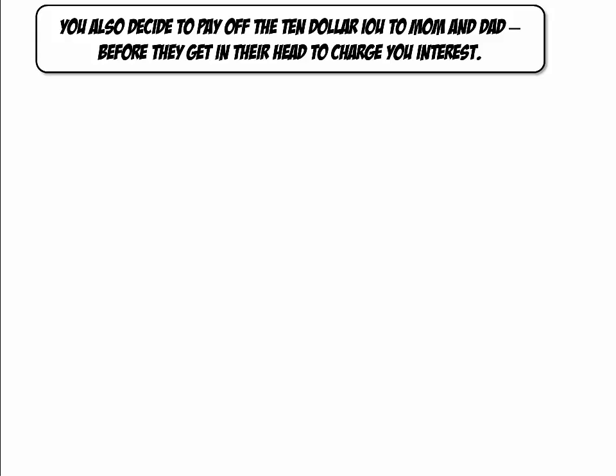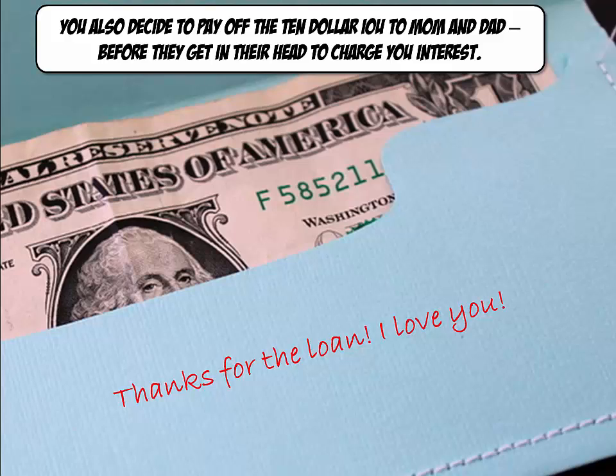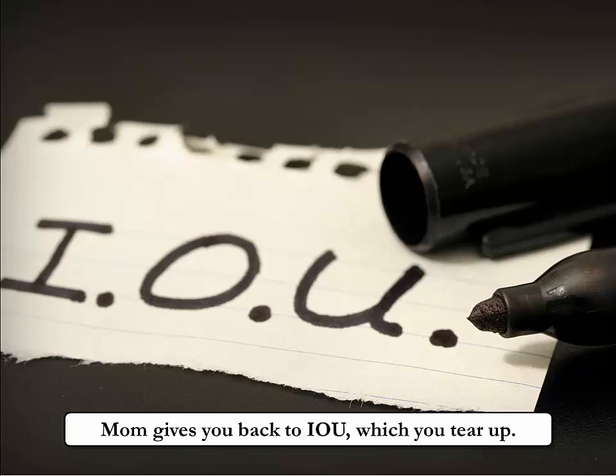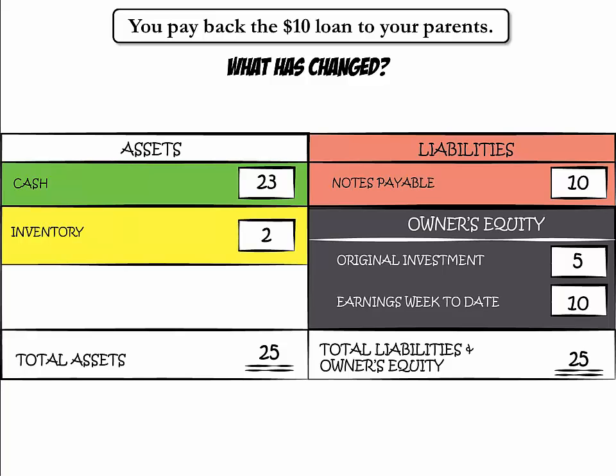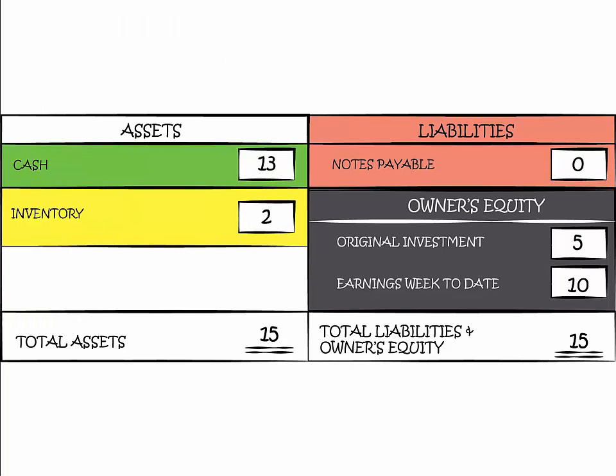You want to pay mom and dad back before they decide to charge you interest. You put the $10 in an envelope and turn it over to them. Mom returns the paper that said you owed them money. Our cash has gone down by $10 to $13, and notes payable was also reduced from $10 to $0. Total assets, as well as total liabilities plus owner's equity, both become $15. We are back in balance.